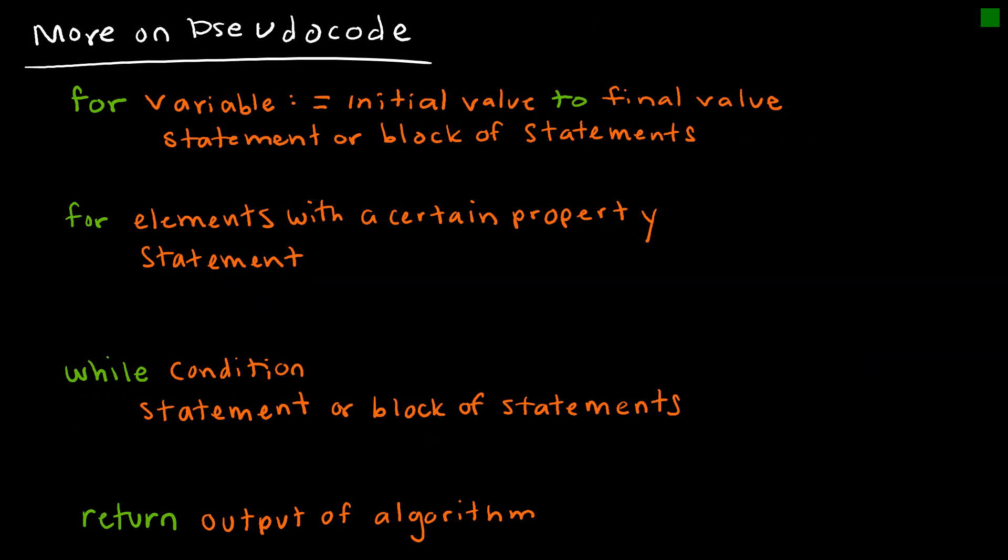A few more commands in pseudocode you might see. So this one is for some variable. So for some variable equal to an initial value to some final value. And so remember before we said for i and we said that started at two to n. So that told me that that subscript was two through n. And then it tells us what's happening statement or block of statements. Or we can say for elements with a certain property. Same thing for this, then some statement is true. We can have while. So while something, some condition, then statement, which is very similar. And then, of course, this is what we had on the last one. Our return or output is going to be the output of our algorithm or what the computer would then give us as a result of the algorithm.